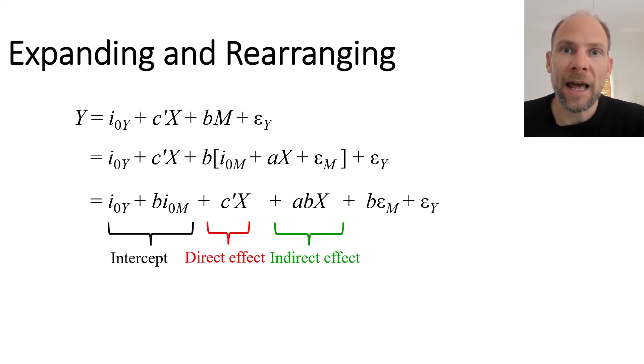X enters into the model for Y in two different ways: directly with c' and indirectly with the product of the a and b coefficients. We have an error term that also consists of two components, b times the error term for the mediator and then the error term for Y.